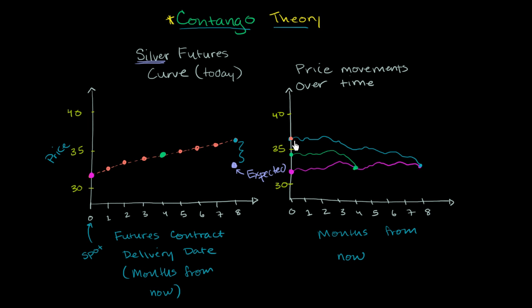is over time going to converge downward to the actual spot price. So what I've done here - this is the futures curve. This is just the delivery price of the different contracts going forward in time. But this is the delivery price, the market delivery price today, right now.